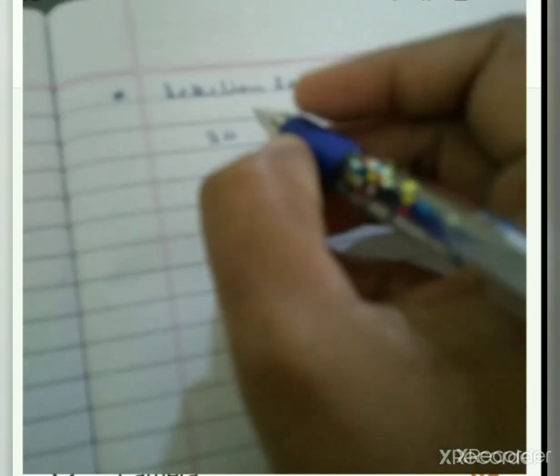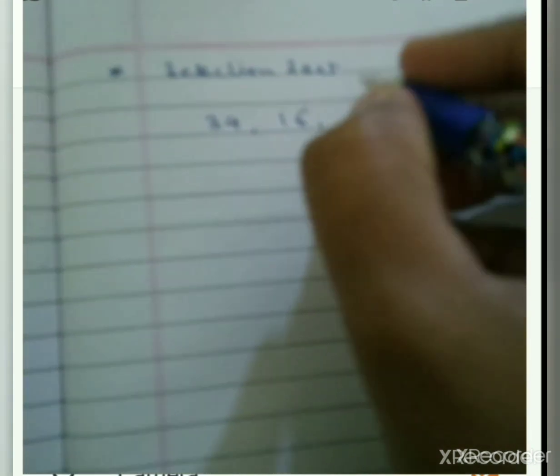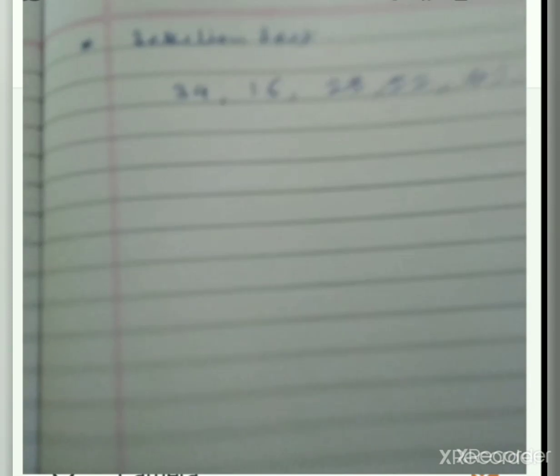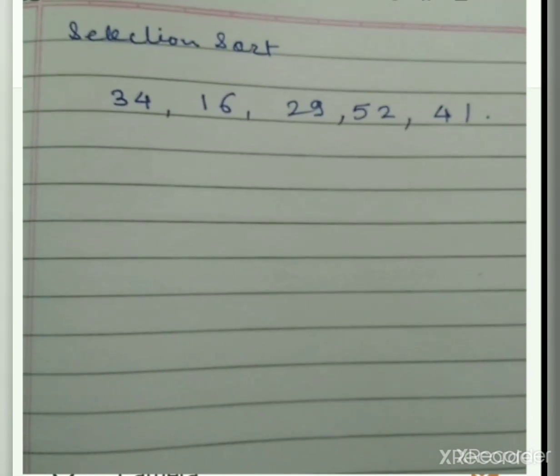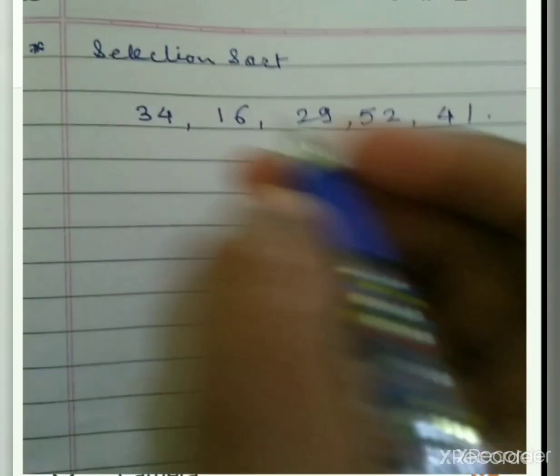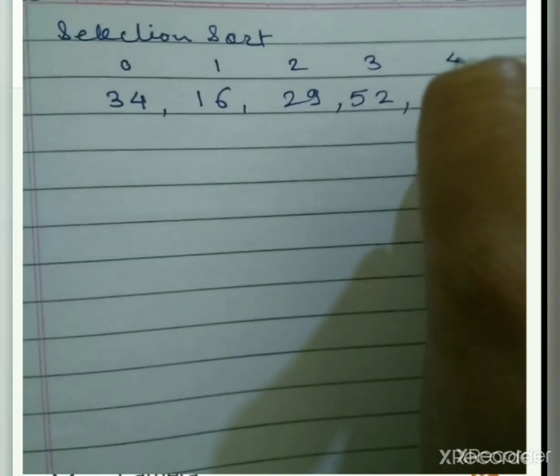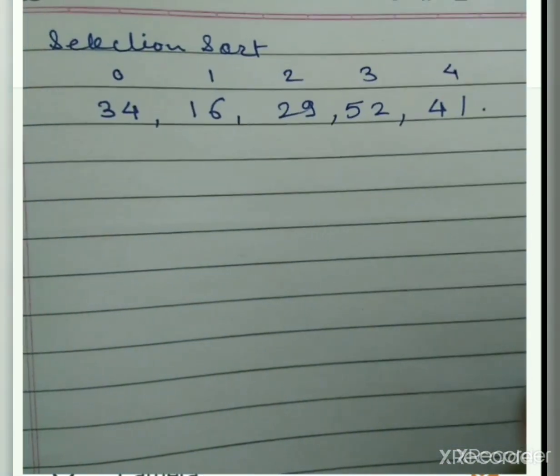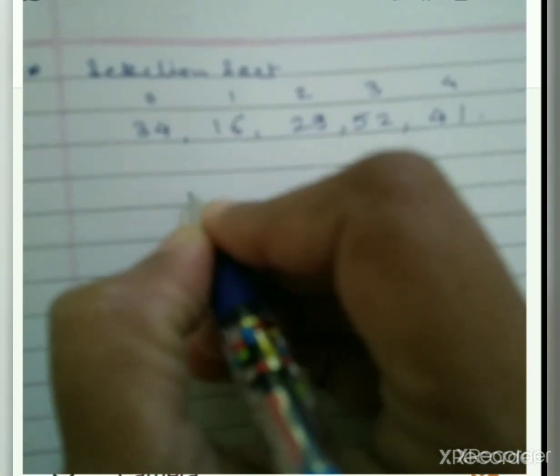For selection sort, we take a new example with elements: 34, 16, 29, 52, and 41. These are the elements we'll sort using selection sort. The array positions are very important here: 0, 1, 2, 3, and 4. We are implementing the sort using an array, so we need these array positions for the elements.